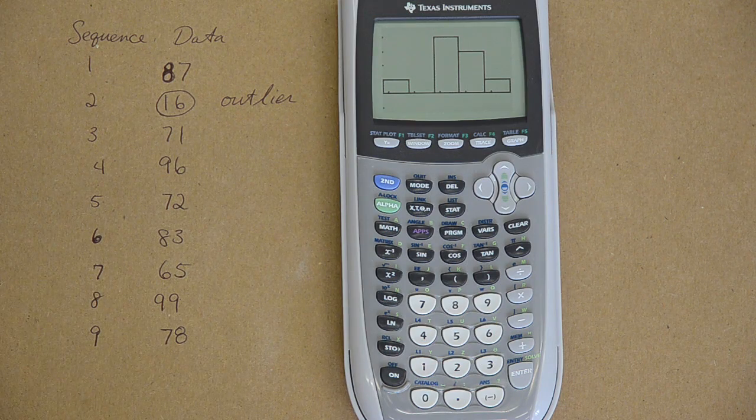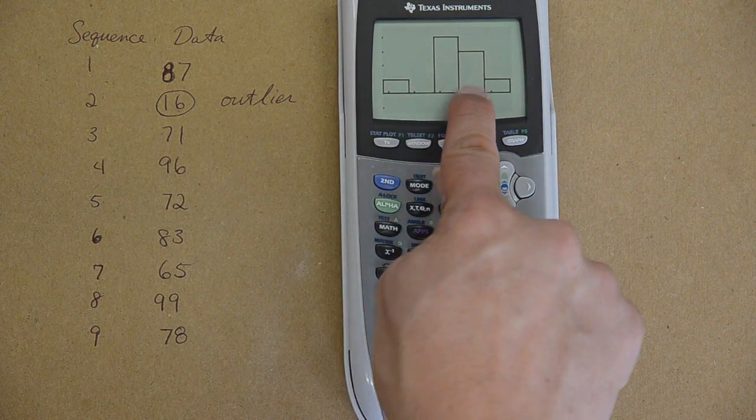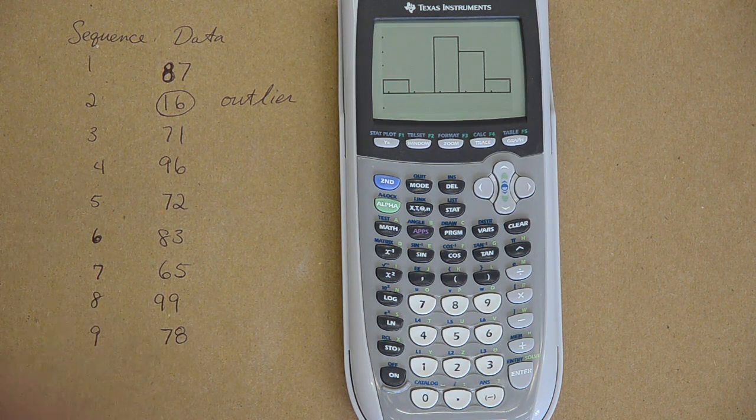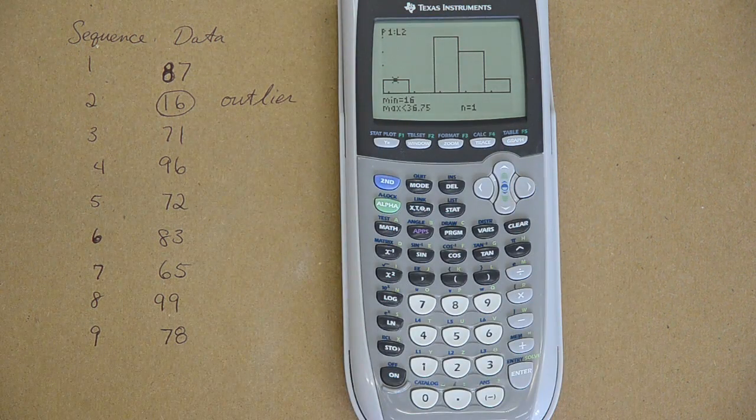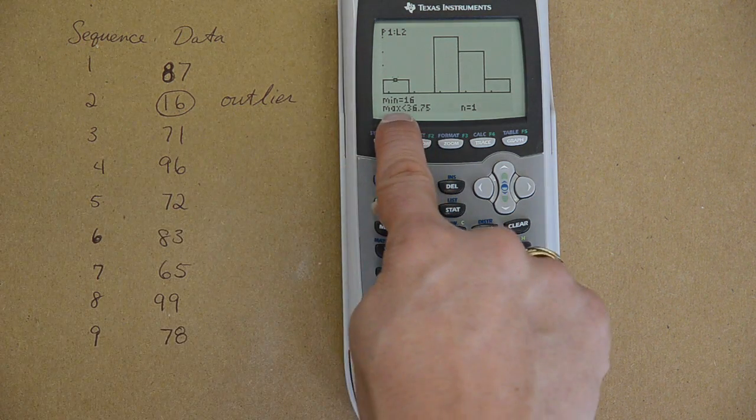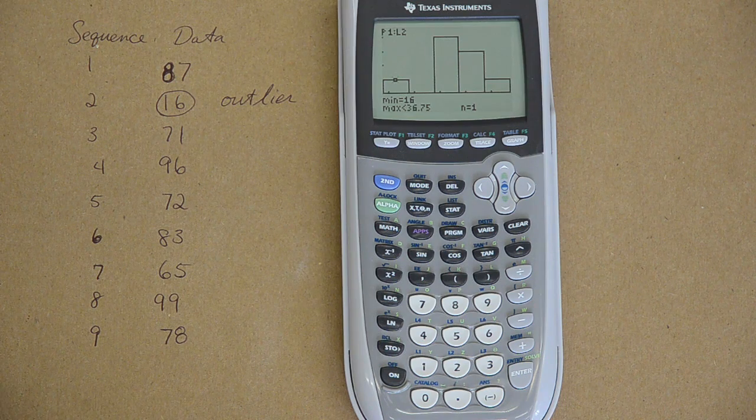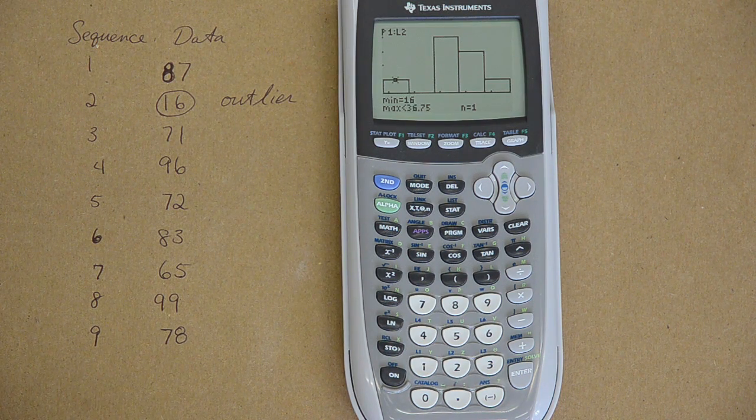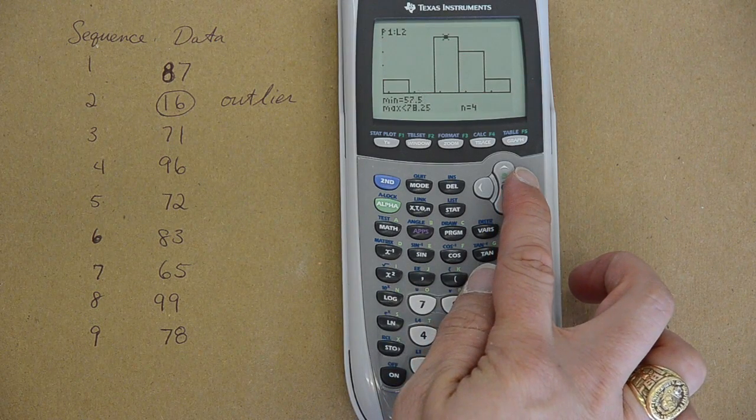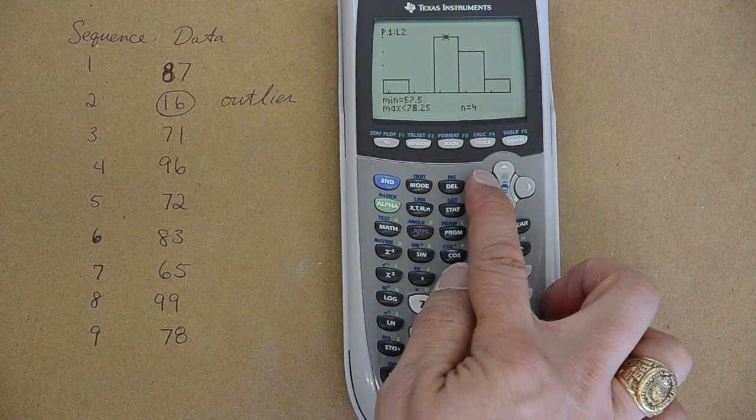Let's hit trace and see what we see. 16 to 36.75. This is how the calculator is telling you how to read the histogram. That class is for x's greater than or equal to 16 and less than 36.75. We got some decimals in our intervals, but yet our data had no decimals.